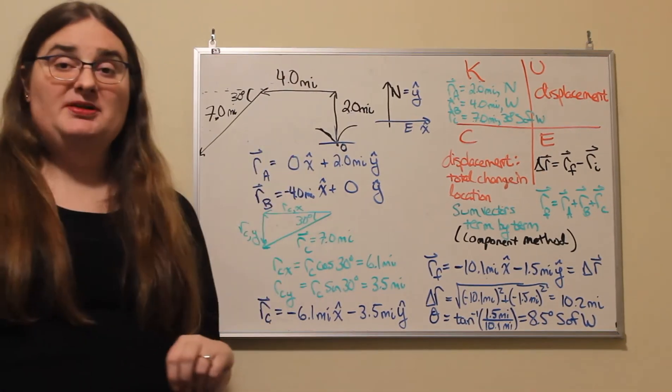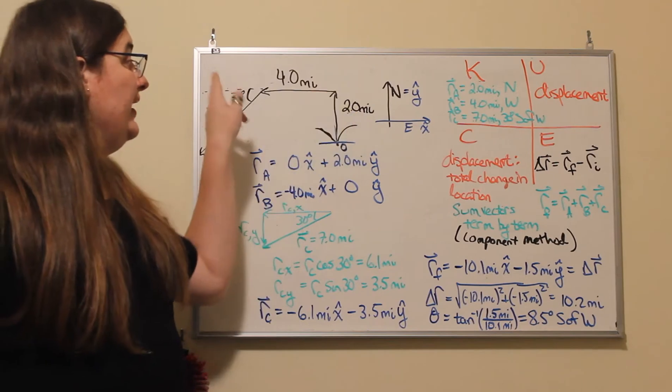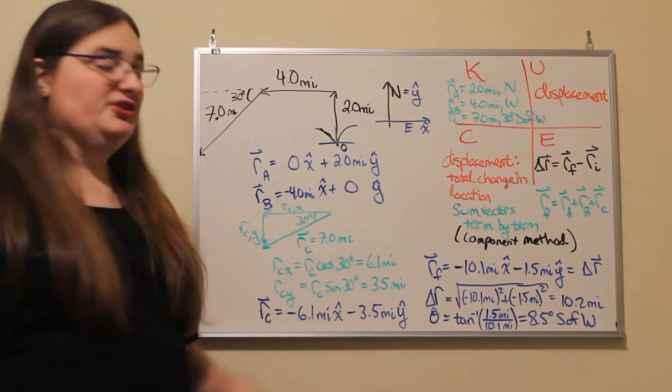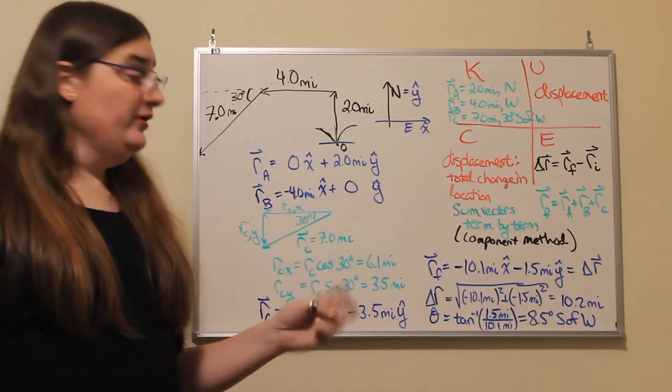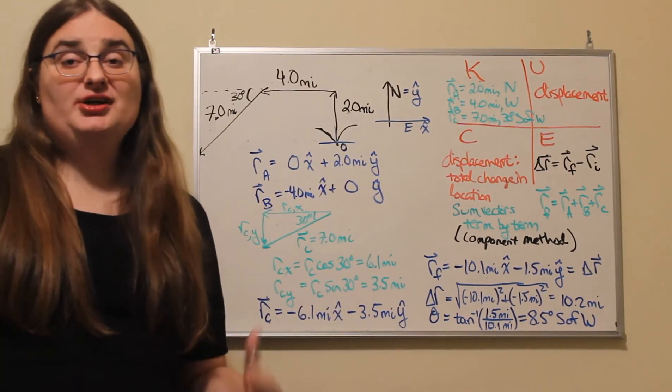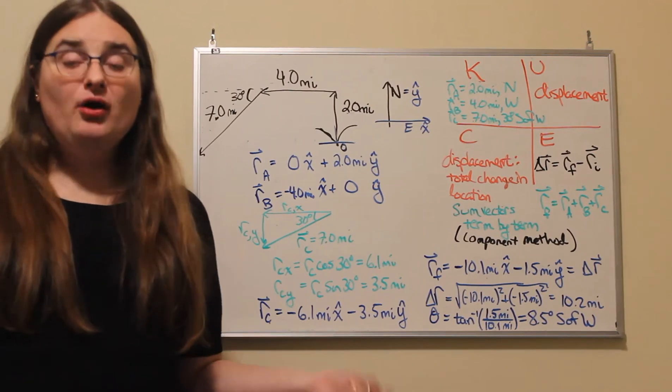For my second displacement b, if I'm going west, I have the negative x direction for 4.0 miles as my component plus nothing in the y direction. If I'm just going west, I'm not going north or south.